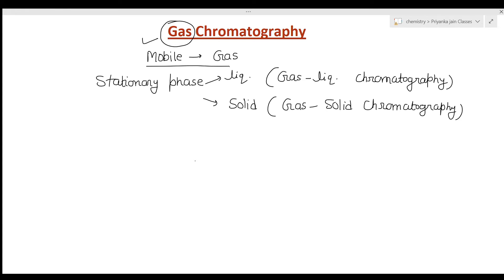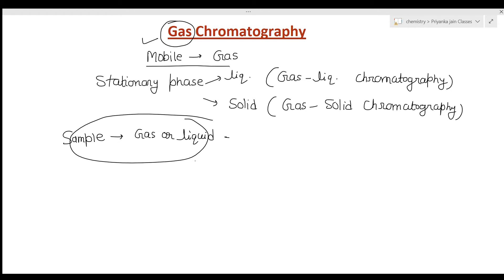In gas chromatography, the sample — which may be either gas or liquid — is injected into a stream of the inert gaseous mobile phase. This mobile phase is called the carrier gas. The sample is injected into the carrier gas.